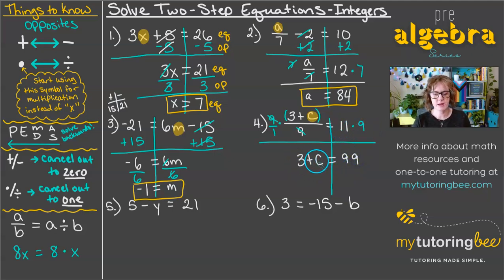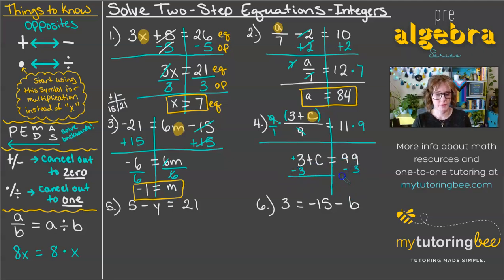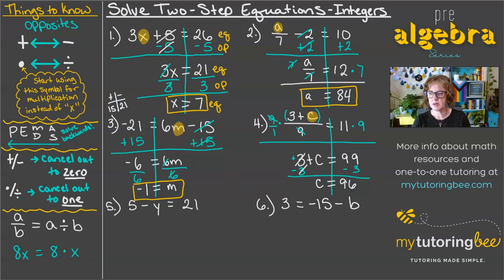Now we have 3 plus C equals 99. We want to undo this positive 3 by subtracting 3 — that's what cancels it out and makes it equal to 0. We subtract 3 from the other side as well, and that leaves us with C equals 96. That is our solution for problem 4.